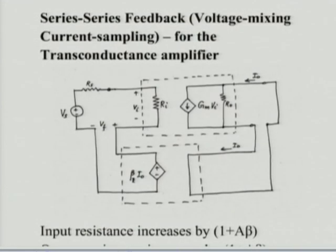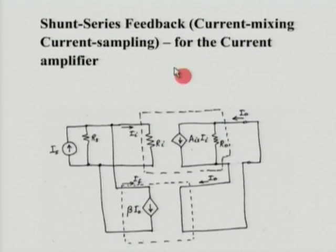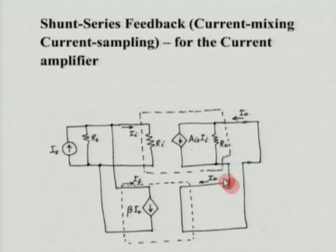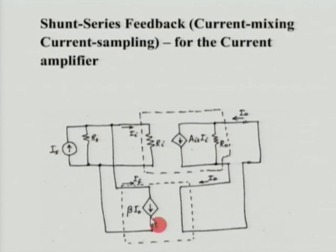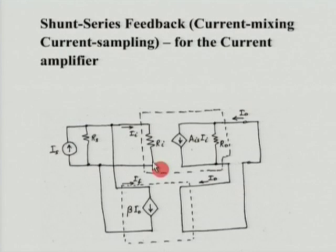Let us quickly look at the other amplifier types. For the current amplifier, applying feedback — we have a shunt connection at the input and a series connection at the output (series sampling). In an ideal current amplifier, the input resistance should be 0, which we can never achieve. But by giving negative feedback, we can reduce R_i substantially, close to zero. With a shunt connection, the previous R_i gets reduced to R_i / (1 + Aβ). So in a current amplifier, by applying negative feedback, you reduce the input resistance by a factor of (1 + Aβ).